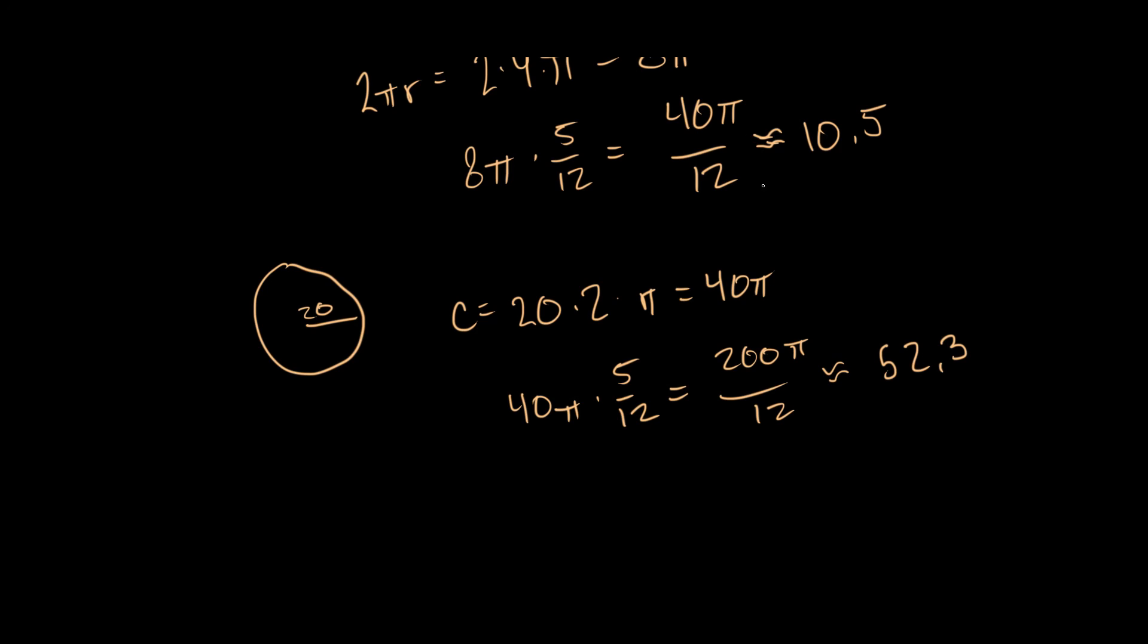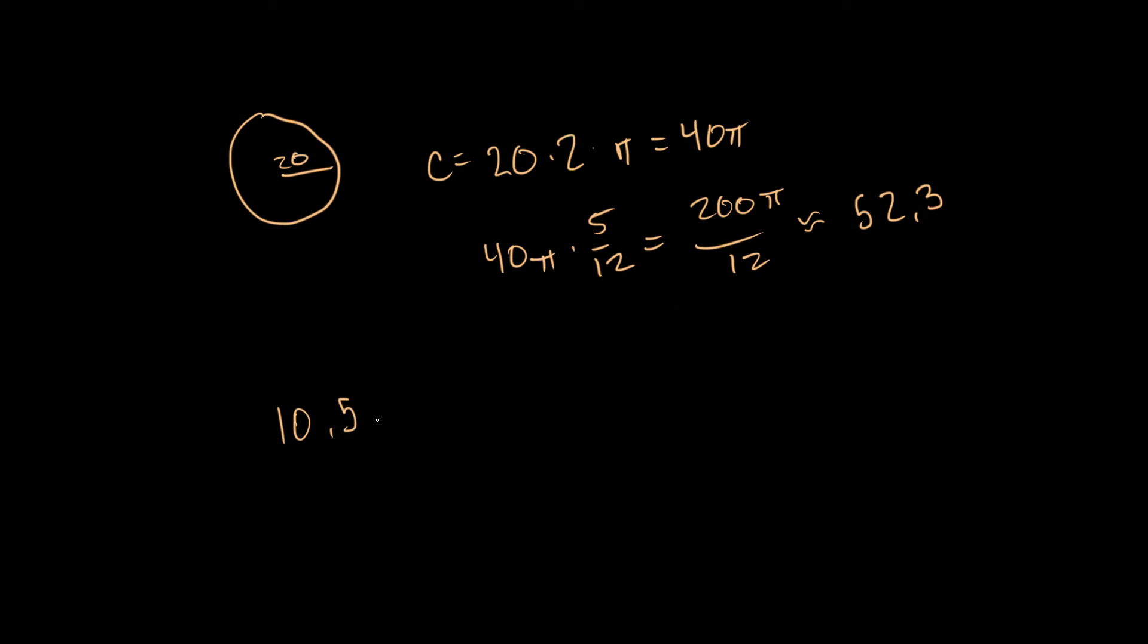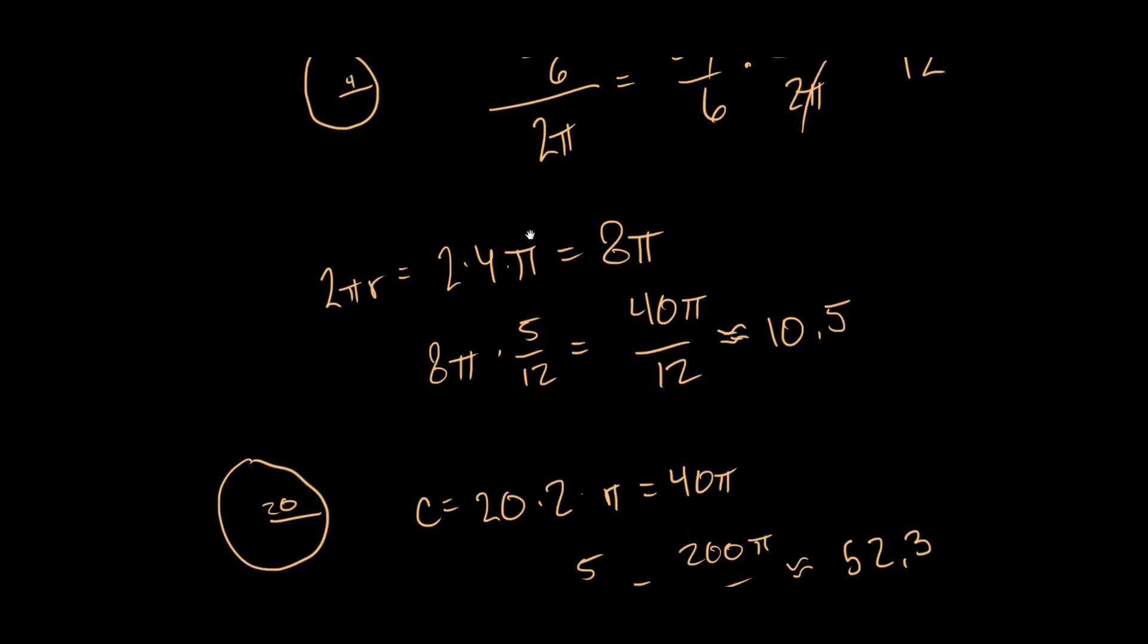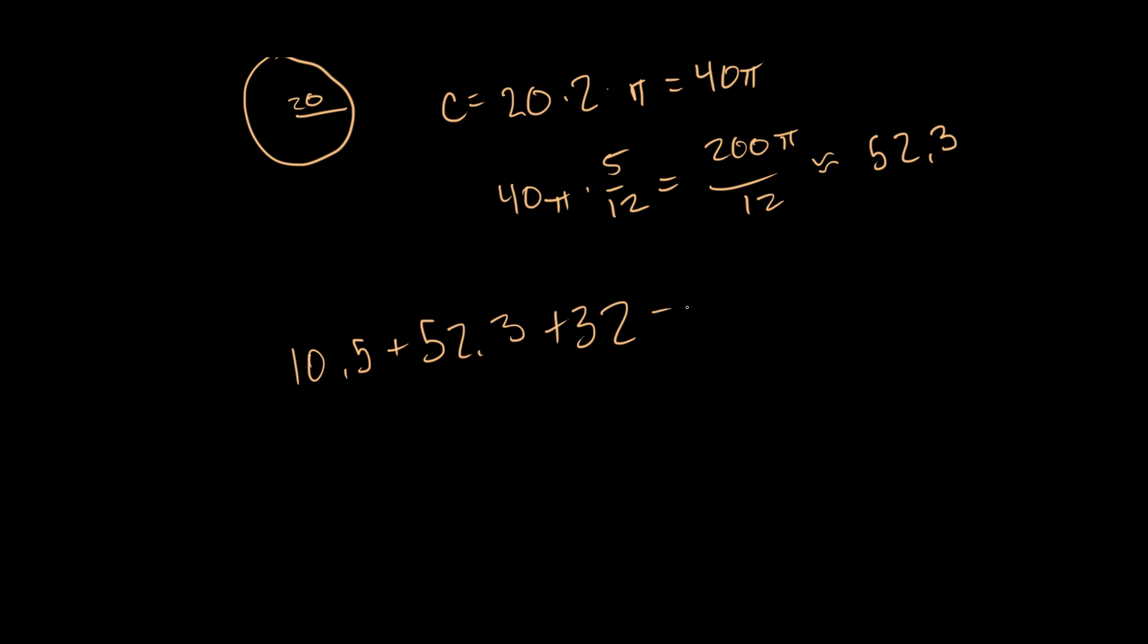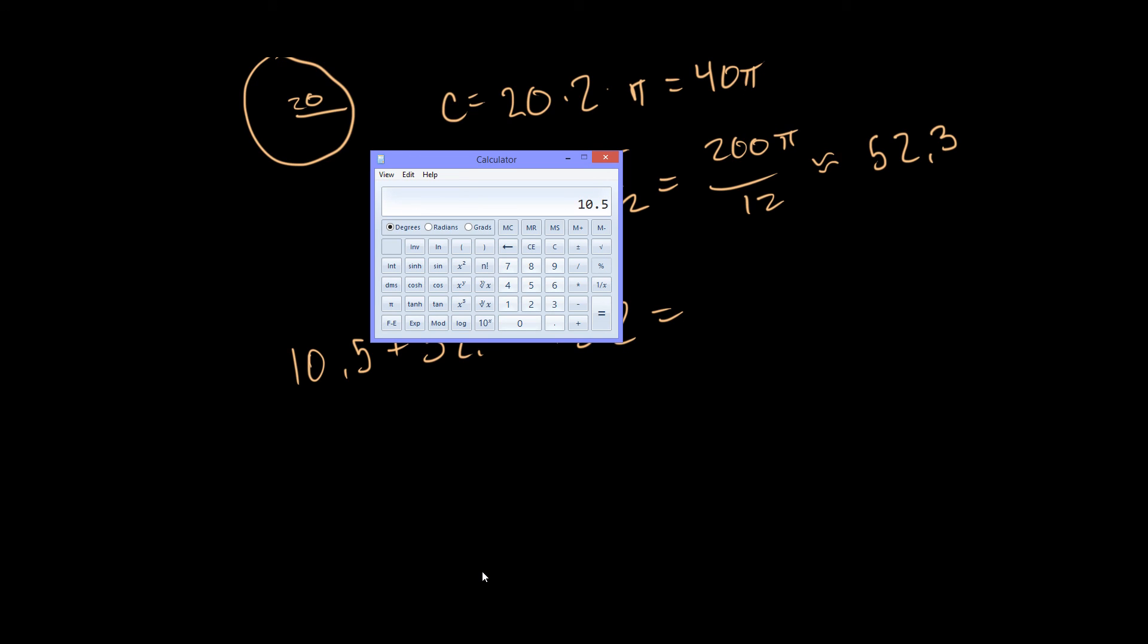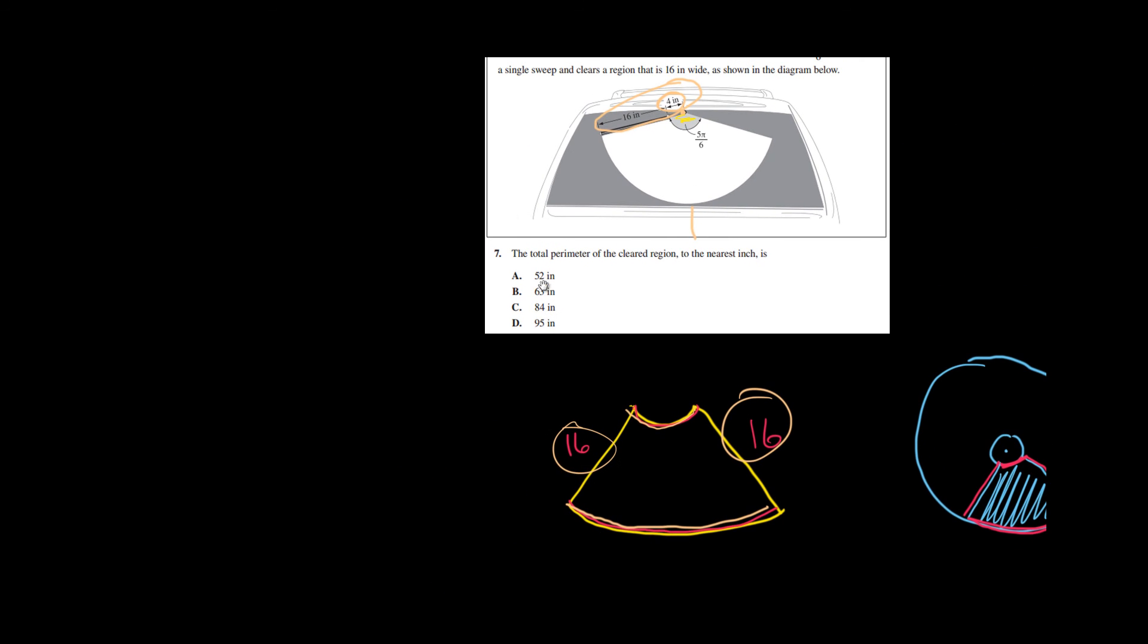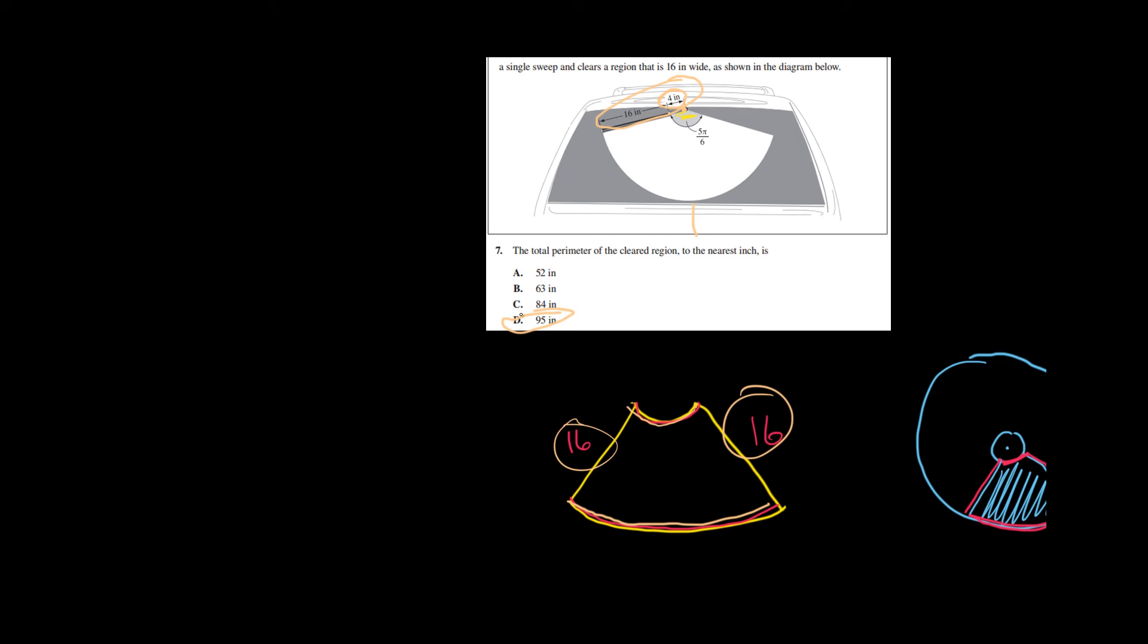So now what do we have? We have this 10.5 plus the 52.3 and we have the 16s that we found right at the beginning. So that's going to be another 32. So if we add those up what do we get? We get 10.5 plus 52.3 plus 32 gives us 94.8. And they want it to the nearest inch so we're going to round that up to 95. Let's see if we have any answers that are similar to 95. Well what do you know? We do. We have answer choice D.